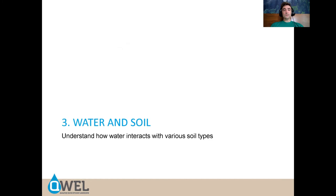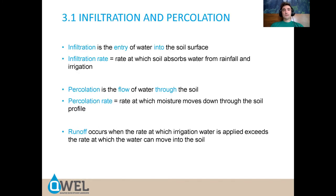Let's talk about water and soil and how the two interact. Infiltration is the entry of water into the soil surface, so the infiltration rate is the rate at which soil absorbs water from rainfall and irrigation. Once it infiltrates, it percolates — percolation is the flow of water through the soil, and there is a percolation rate that can be measured. If the infiltration rate exceeds the percolation rate, you will have runoff, which we want to avoid.